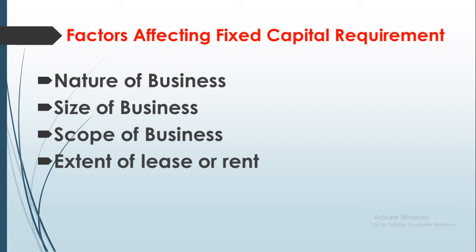Another point is the size of a business — whether it is small or large. If a business enterprise is on a large scale, with large-scale production, then automatic machinery and equipment are needed, and obviously a larger quantity of fixed assets is required. But if a business enterprise's size is quite small, the need for fixed assets is also less. Now, scope of business: business enterprises established to undertake production or distribution on a large scale need a huge amount of fixed capital. But if your business scope is at a small level, then the requirement of fixed capital is less.